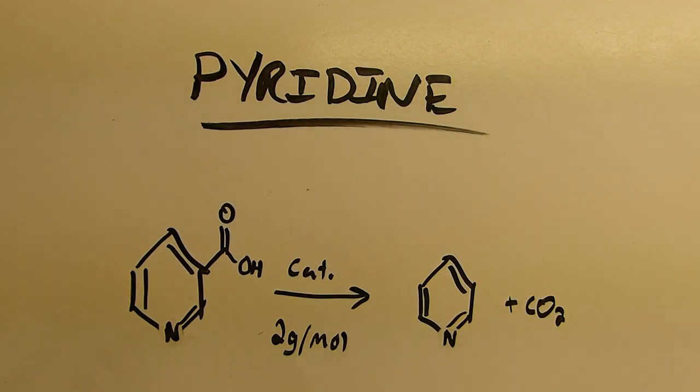Hi everyone and welcome back to the lab. In this video I'll be making pyridine by decarboxylating niacin. So this is niacin right here. It's also known as nicotinic acid and that's because it's a hydrolysis product of nicotine, the same nicotine you might find in cigarettes and other tobacco products.